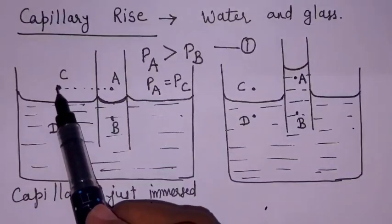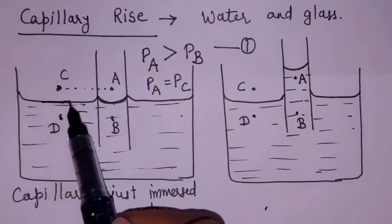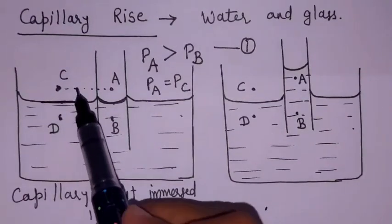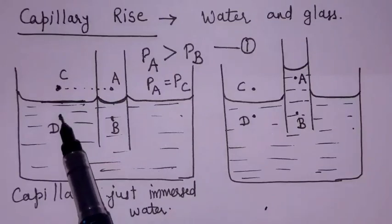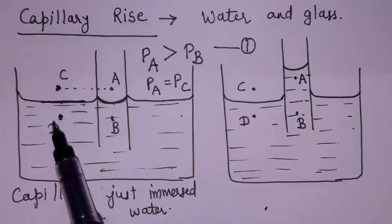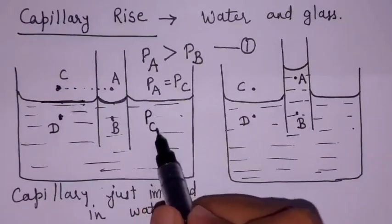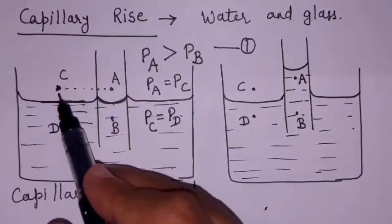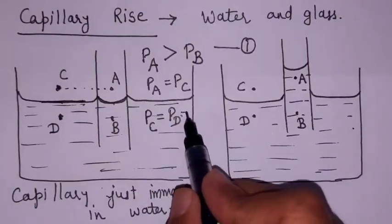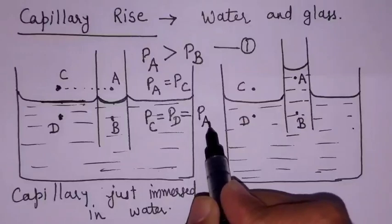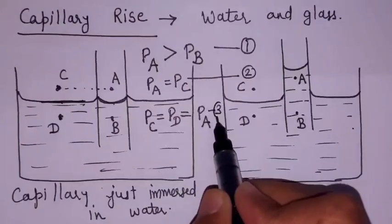Comparing points C and D, since both are on opposite sides of the flat liquid surface, the pressure difference is zero: PC equals PD. Since PC equals PA, we also get PD equals PA — this is Reason 3. So we have three reasons in total.